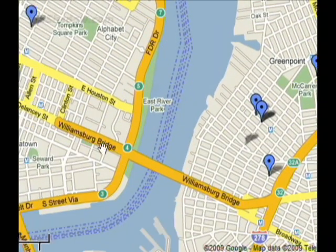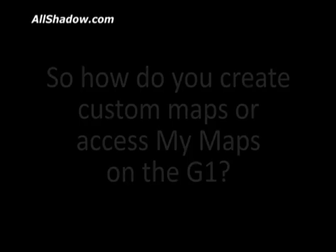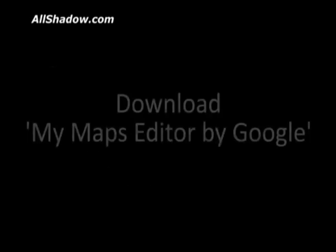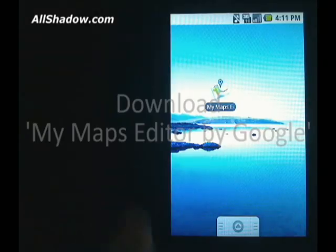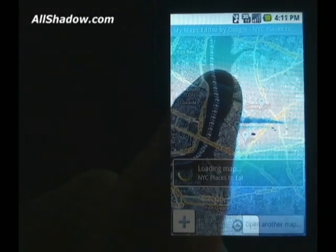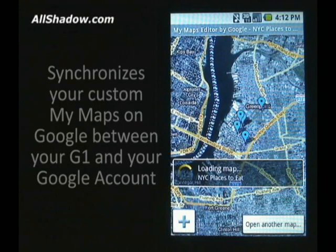But what if I want to view it on Android on my G1? Or better yet, what if I wanted to create a map like this on my G1? That's easy — just go to the Android Market and download My Maps Editor by Google. This application will synchronize your maps between the G1 and your My Maps account on Google.